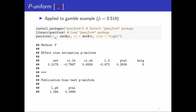We need to provide input for the argument yi — these are the effect sizes stored in the data frame. We also need to provide the sampling variances vi, also from the data frame. Finally, we specify the side argument, which can be either right or left, indicating whether the significant effect sizes are in the right or left tail of the distribution.